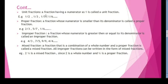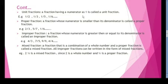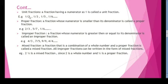Unit fractions: a fraction whose numerator is 1 is called a unit fraction. For example, 1 by 2, 1 by 3, 1 by 5, and 1 by 6 — all have numerator 1, so we call them unit fractions. Similarly, 1 by 8, 1 by 9, and so on.